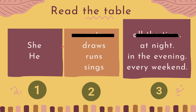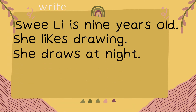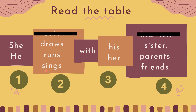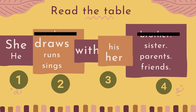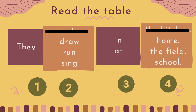Number 3: she draws at night. Ambil yang kedua, salin: She draws at night. Next — 'her' is for girl, 'his' is for boy. Swilly is a girl, so she draws with her sister. Copy: She draws with her sister. Dia lukis dengan kakak dia.